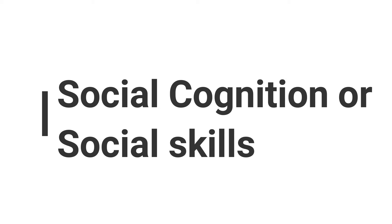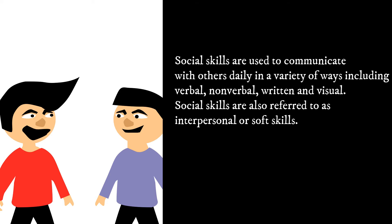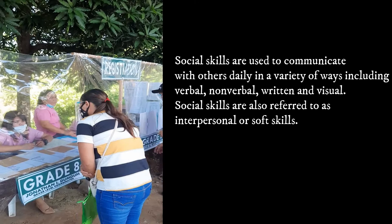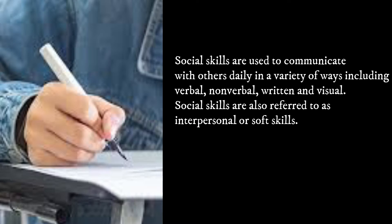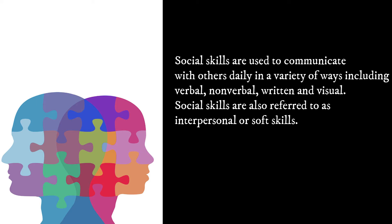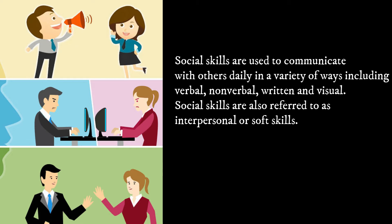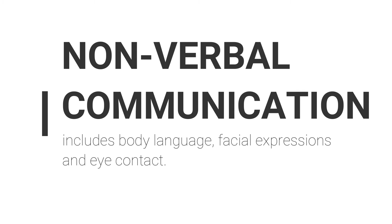Let us first look at social cognition or social skills. Social skills are used to communicate with others daily in a variety of ways, including verbal, non-verbal, written, and visual. Social skills are also referred to as interpersonal or soft skills. Verbal skills involve the spoken language, while non-verbal communication includes body language, facial expressions, and eye contact.